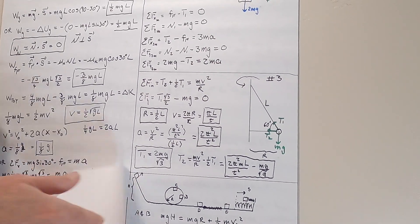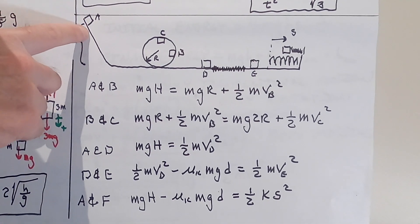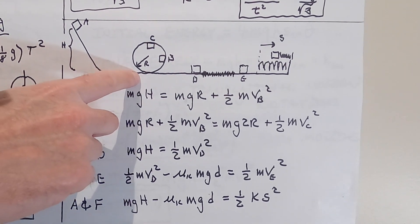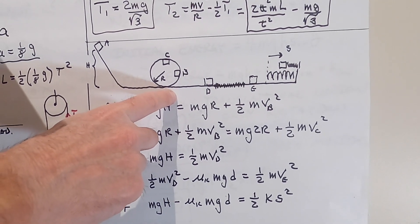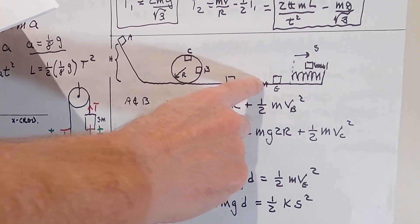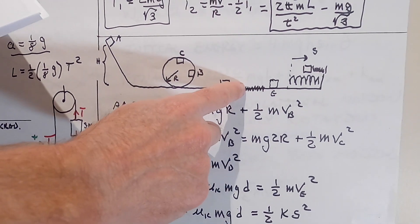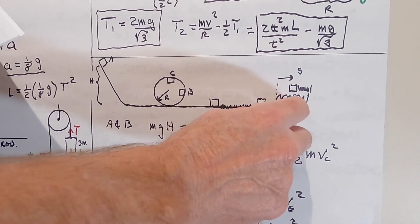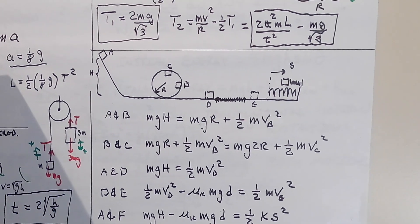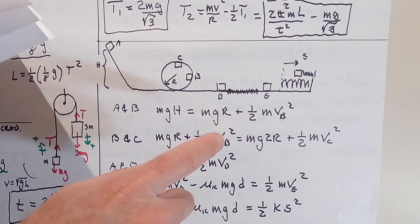Problem number four: a block of mass m starts from rest and slides down a frictionless ramp a vertical distance h. The surface then levels out before running a loop-de-loop of radius r. The block moves fast enough so it doesn't leave the loop. After the loop it encounters a rough section of length d with coefficient of friction mu_k. After the rough section the block hits a spring, compressing it a distance s, with spring constant k. I labeled the points A, B, C, D, E, and F — F is at the very end.